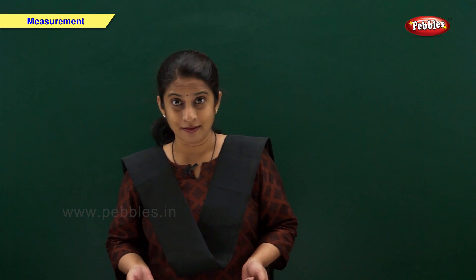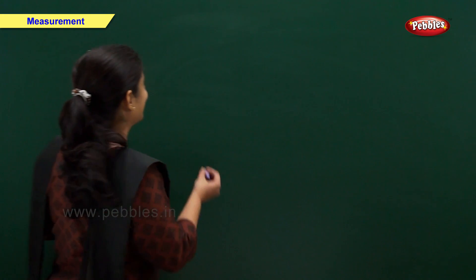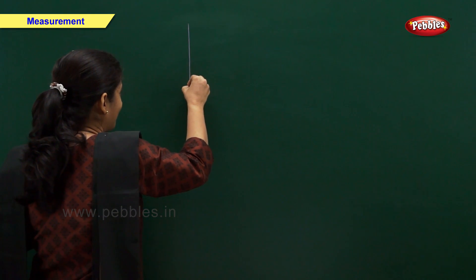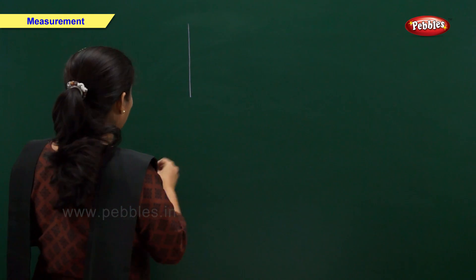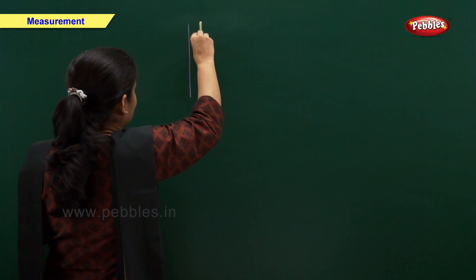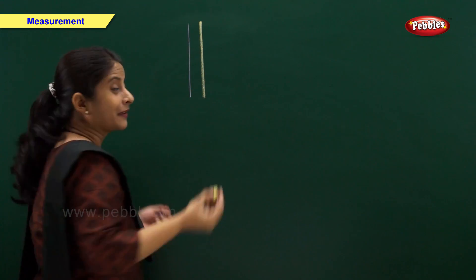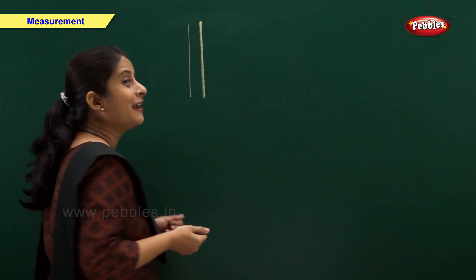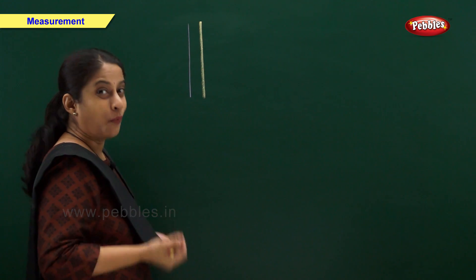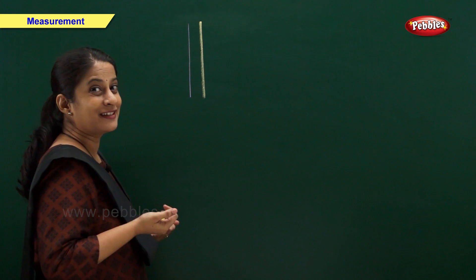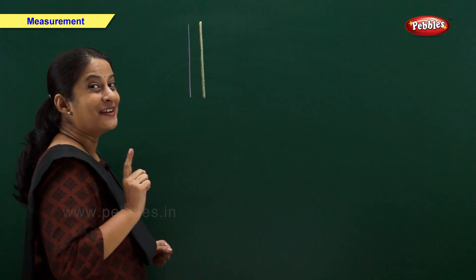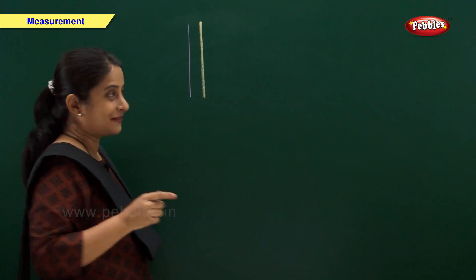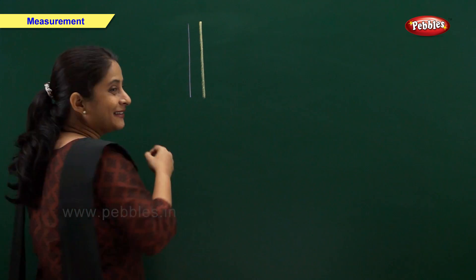Now let us see thicker and thinner. We have two lines, purple and yellow. Now you tell me which line is thicker and which line is thinner. Right. Yellow line is thicker. Purple line is thinner.